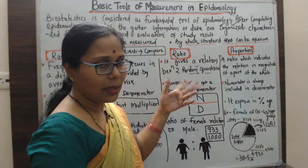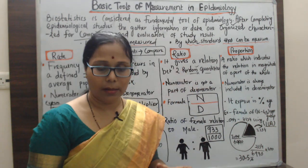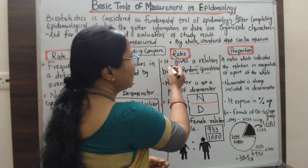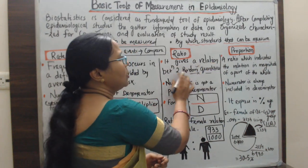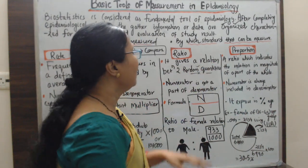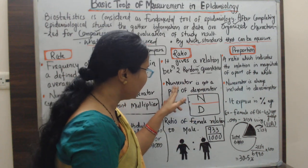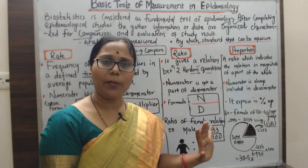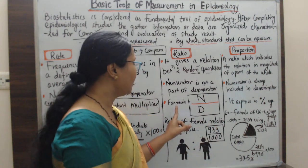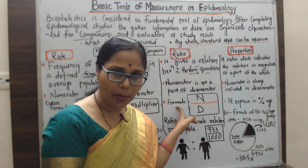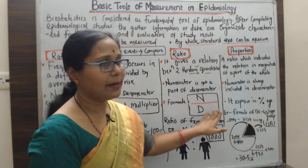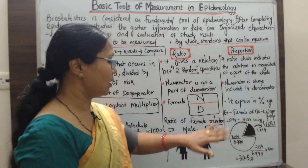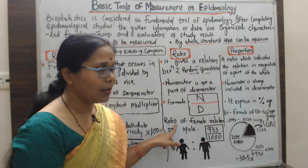The second tool is the ratio. It is a fractional number used to compare two random quantities. It gives a relation between two random quantities. The numerator is not a part of the denominator — the numerator and denominator have no inclusion relationship. The formula is expressed as N to D, or N divided by D.